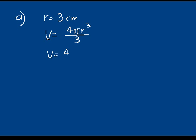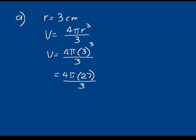Volume equals 4 times pi times 3 cubed over 3. That gives you 4 times pi times 27 over 3. You can simplify 27 over 3 to just 9, leaving 4 times pi times 9, or 36 pi. Pi is equal to 3.14, so on your calculator you do 36 times 3.14, which equals 113.04 centimeters cubed.